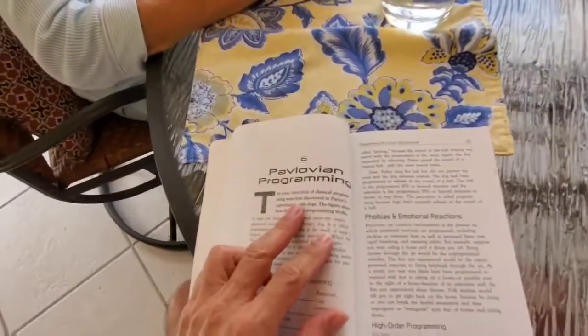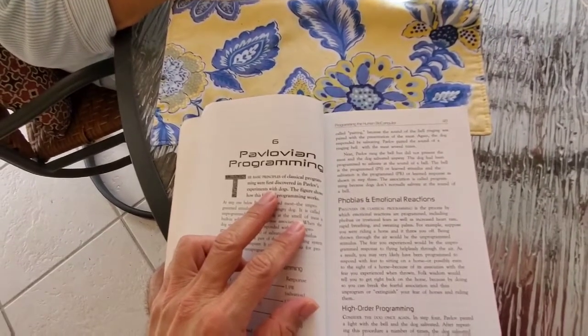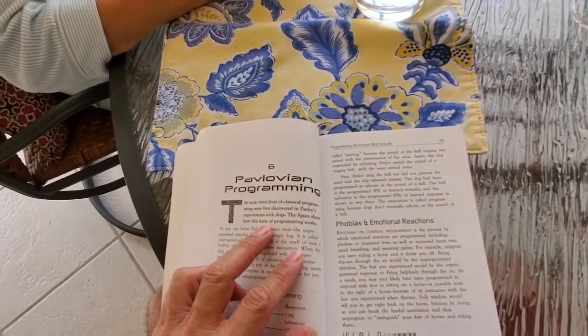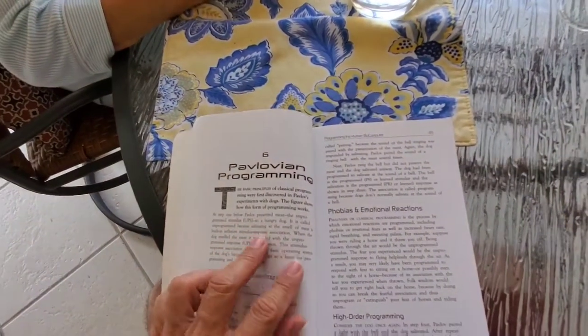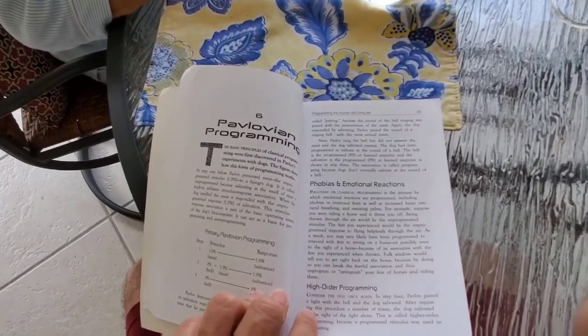The basic principles of classical programming were first discovered in Pavlov's experiments with dogs. The figure shows how this form of programming works - phobias and emotional reactions.